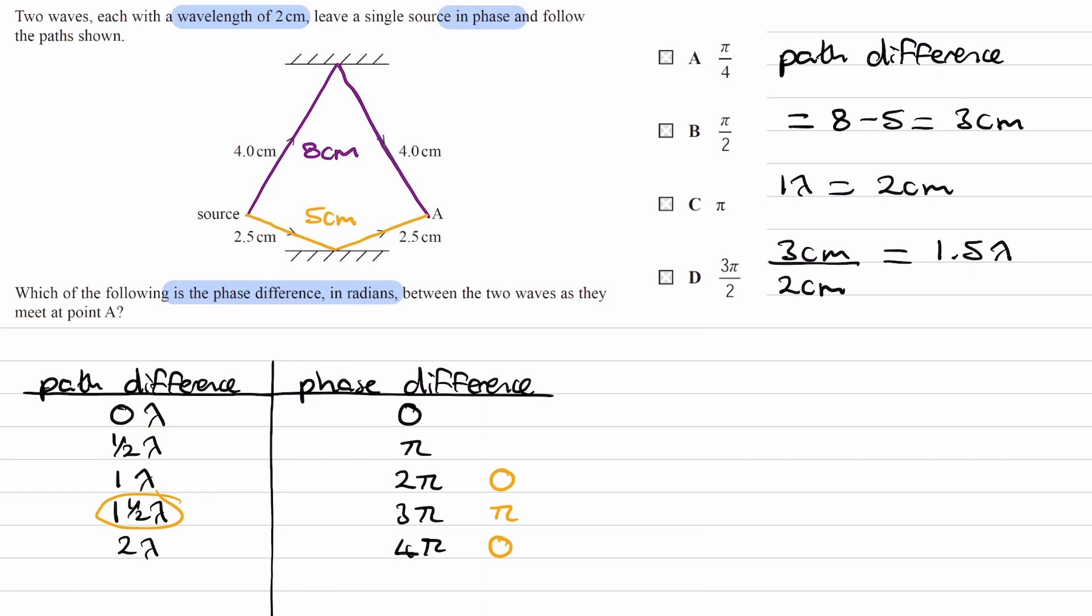So again, the general rule is, whatever our phase difference is, we can take away 2π as many times as we want to, to get our phase difference in an interval of 0 to 2π. And yes, we did that here. With the 1.5 wavelengths, we converted our 3π of phase difference into π, and π would be our answer.